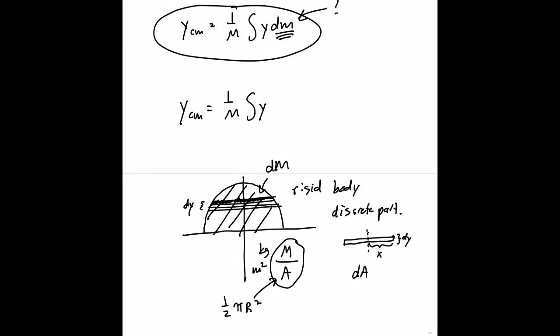So the little bit of area taken up by any given slice is equal to 2x times dy. The idea being total mass over total area gives just the same density as the fractional mass divided by the fractional area.